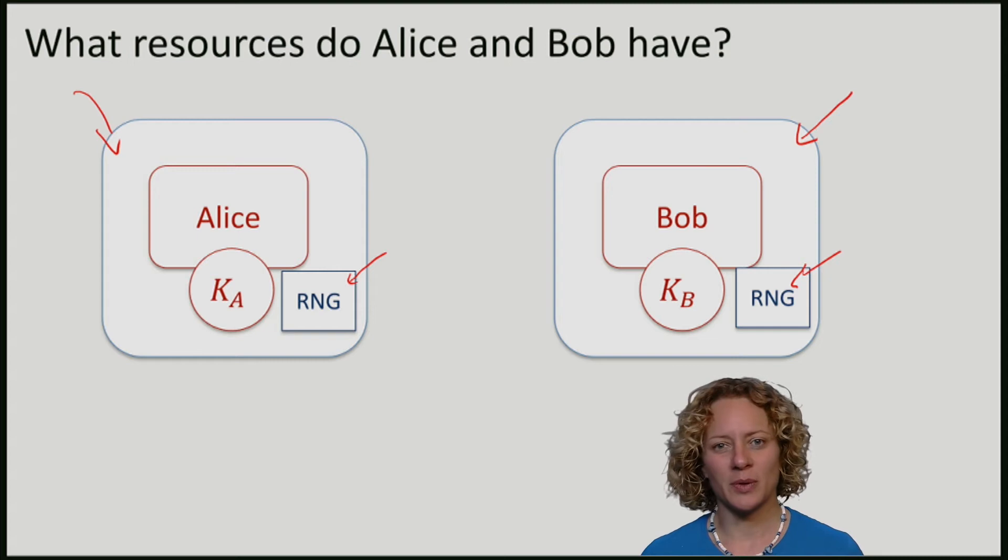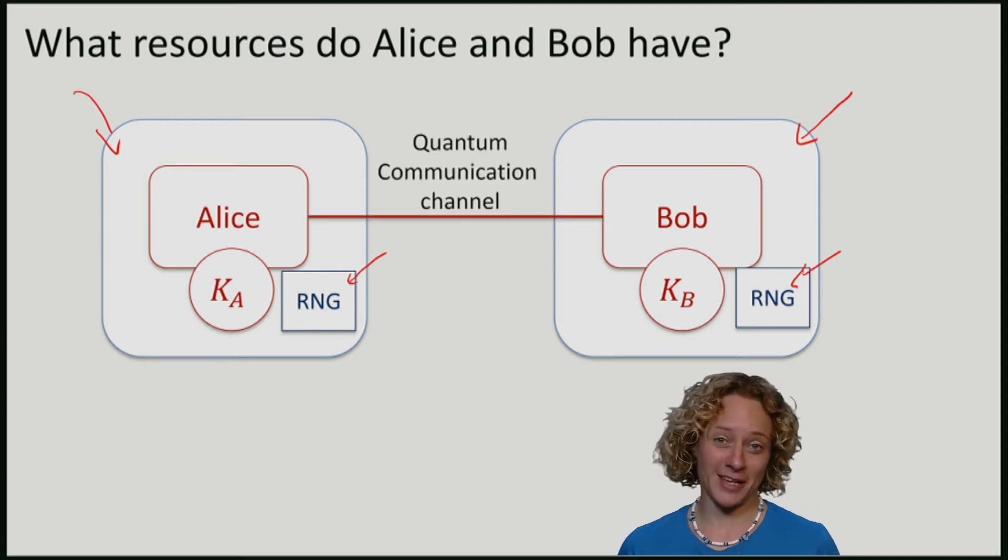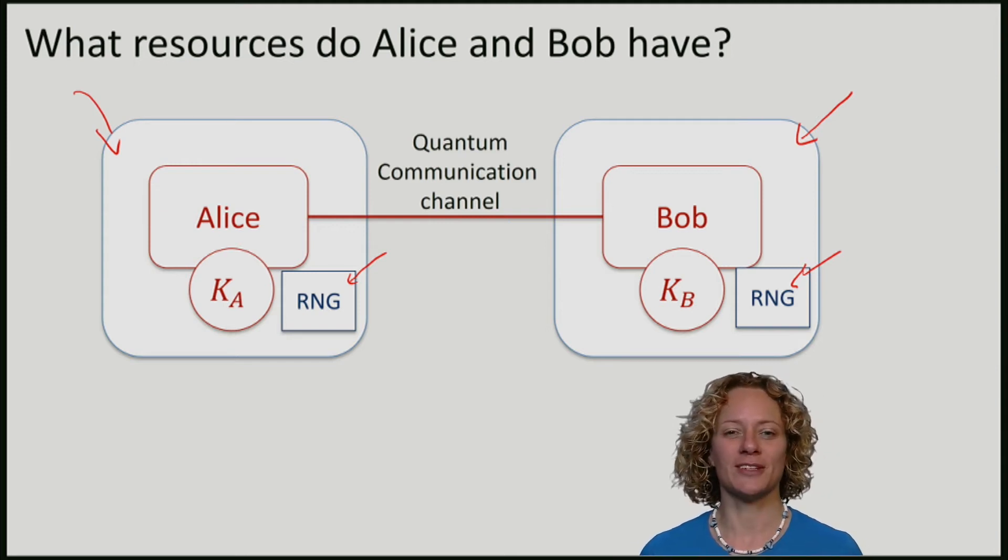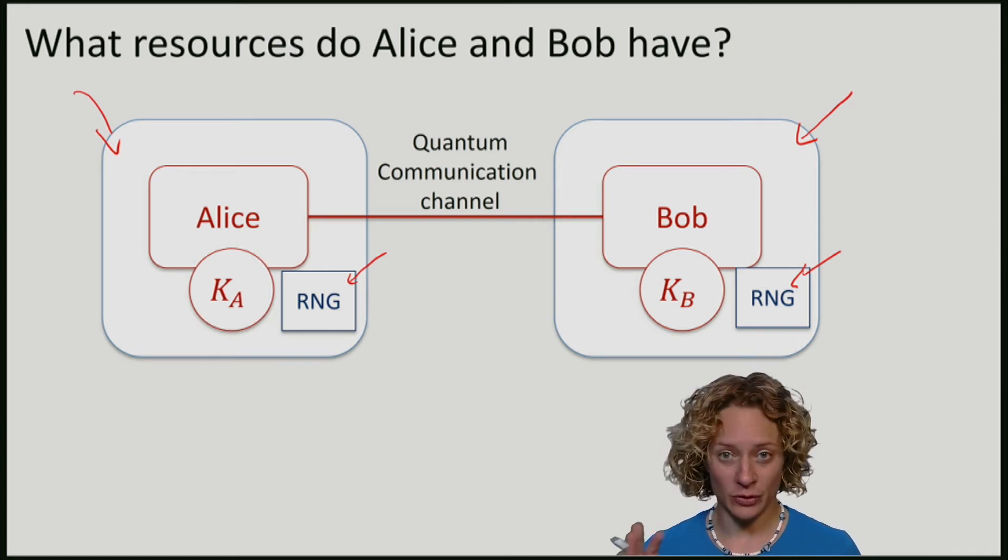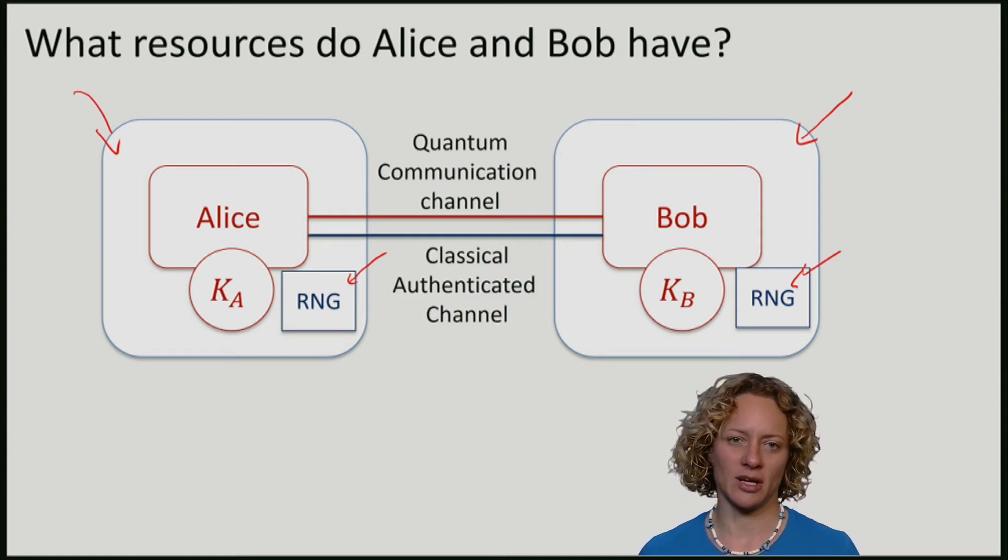Alice and Bob are connected by a quantum communication channel, because as you might imagine, quantum key distribution requires them to send qubits. We will, for the moment, also assume that they are connected by a classical authenticated channel.